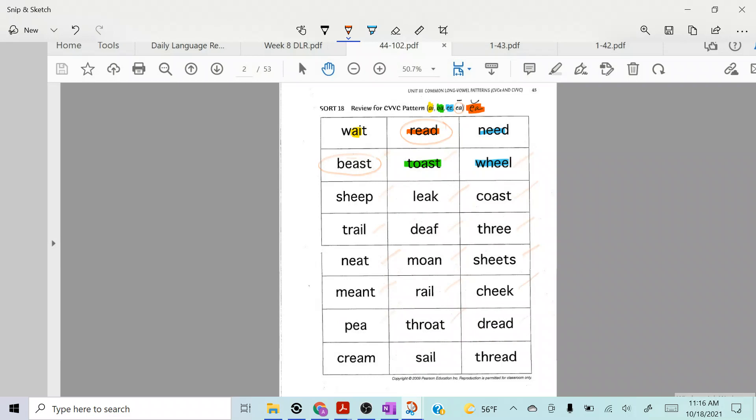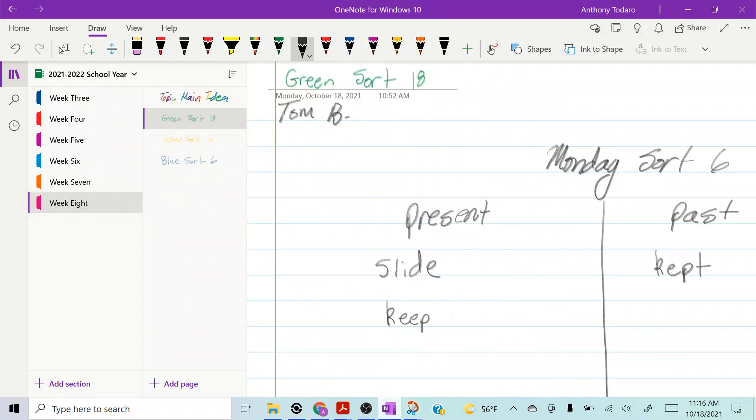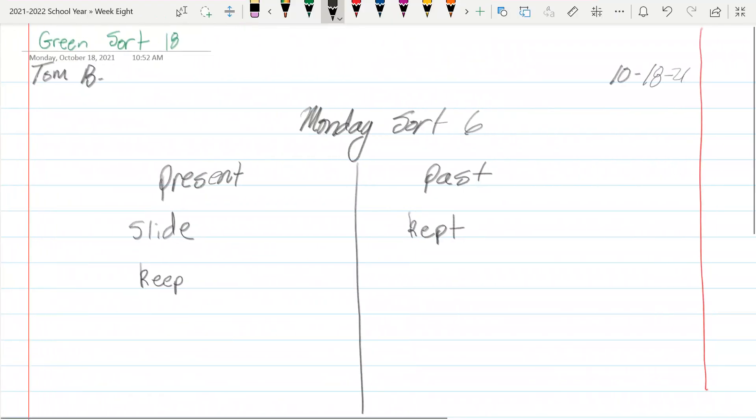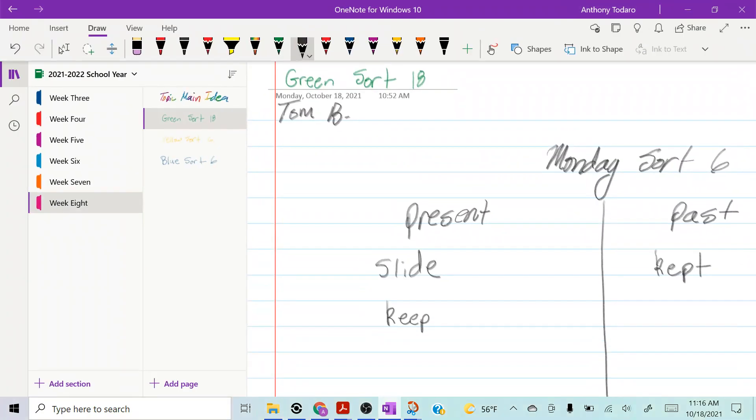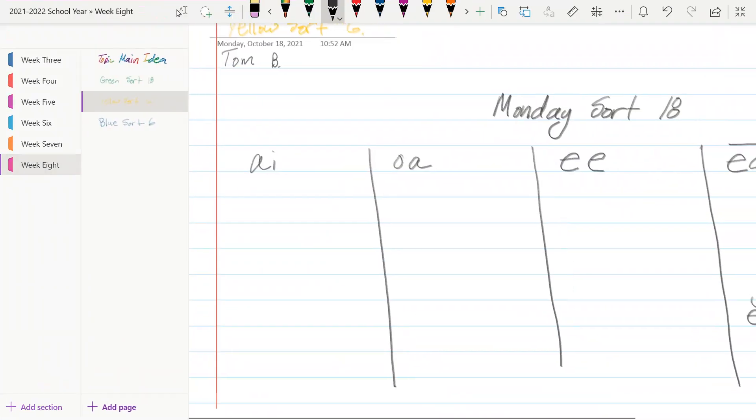Pea, throat, dread, cream, sale, and thread. Now wait, don't jump up just yet because I've got something for you. So my yellow groupers, I set up your sort a little differently. Take a look at what I did here.